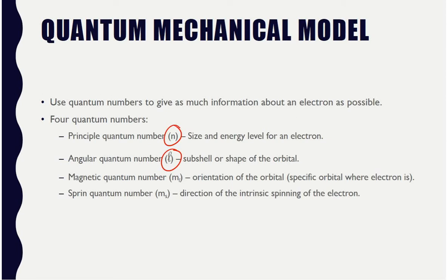The magnetic quantum number is m sub l — again, that is a cursive l, not an e. This tells us the orientation of the orbital: within the subshell, which specific orbital are we talking about? Note that in your textbook, subshell and orbital are sometimes used interchangeably, but I try to keep them separate.